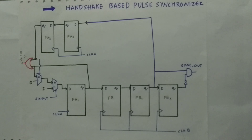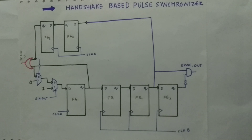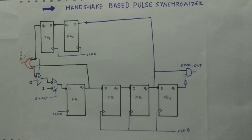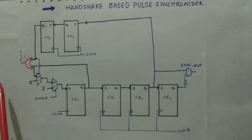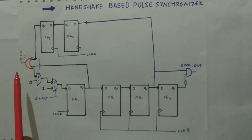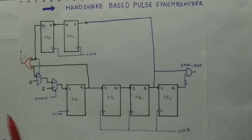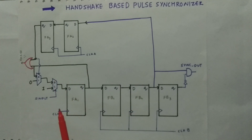Looking at the circuit, we have two clock domains — clock A and clock B. The signal is generated from FSM-A, converted into clock B domain through the normal pulse synchronizer path. A busy signal is asserted back to FSM-A to indicate when it should send the next pulse signal. Let us now look at this circuit in more detail.